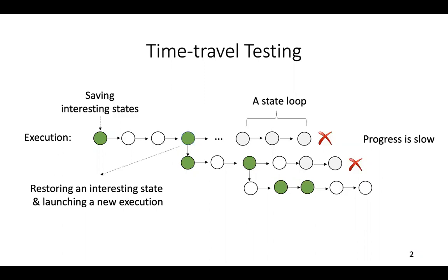And when the progress goes slow — for instance, the execution keeps looping in certain states — we terminate the current execution and restore the most interesting state previously saved, and launch a new execution such that new program behavior can be kept explored during execution. So this is the idea.